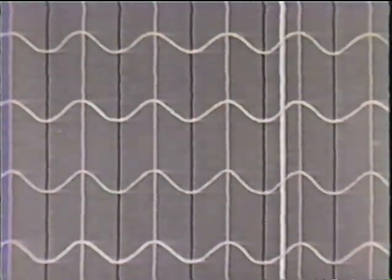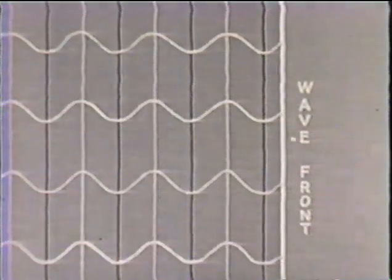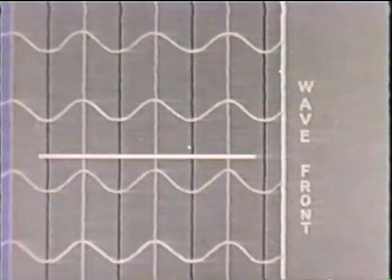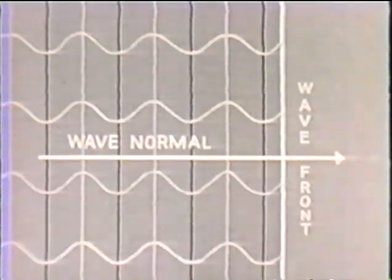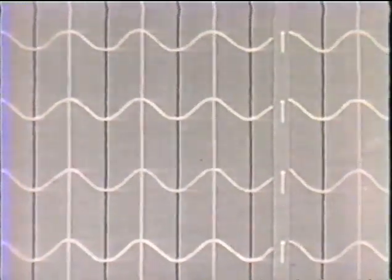which is called a wave front. The direction at right angles to the wave front is called the wave normal. In open space, or in glass, the light travels in the direction of the wave normal.